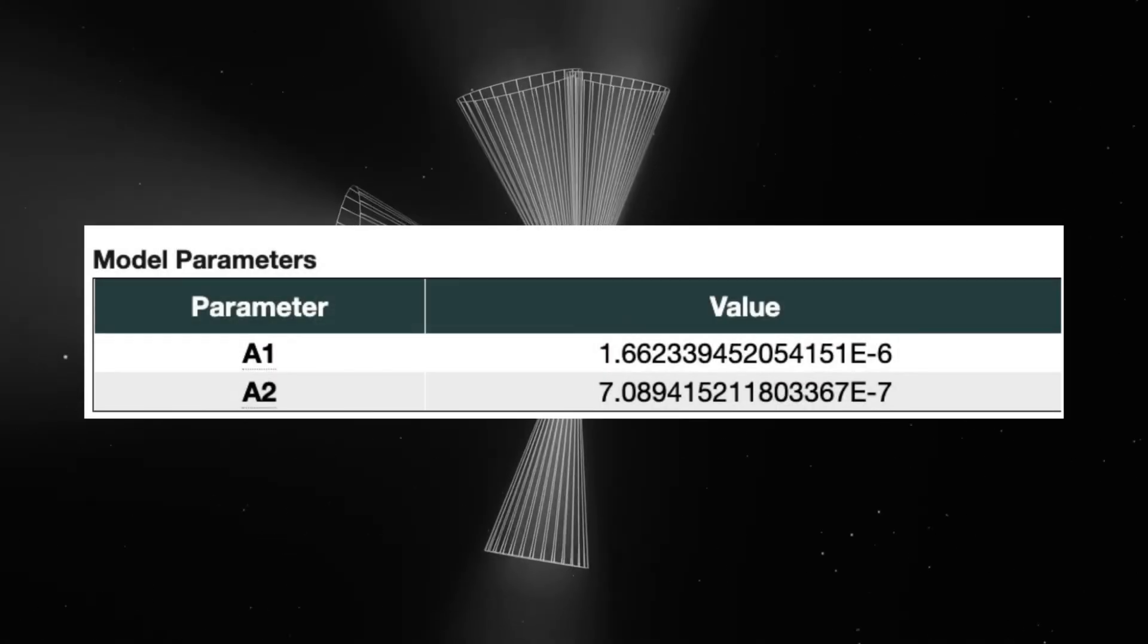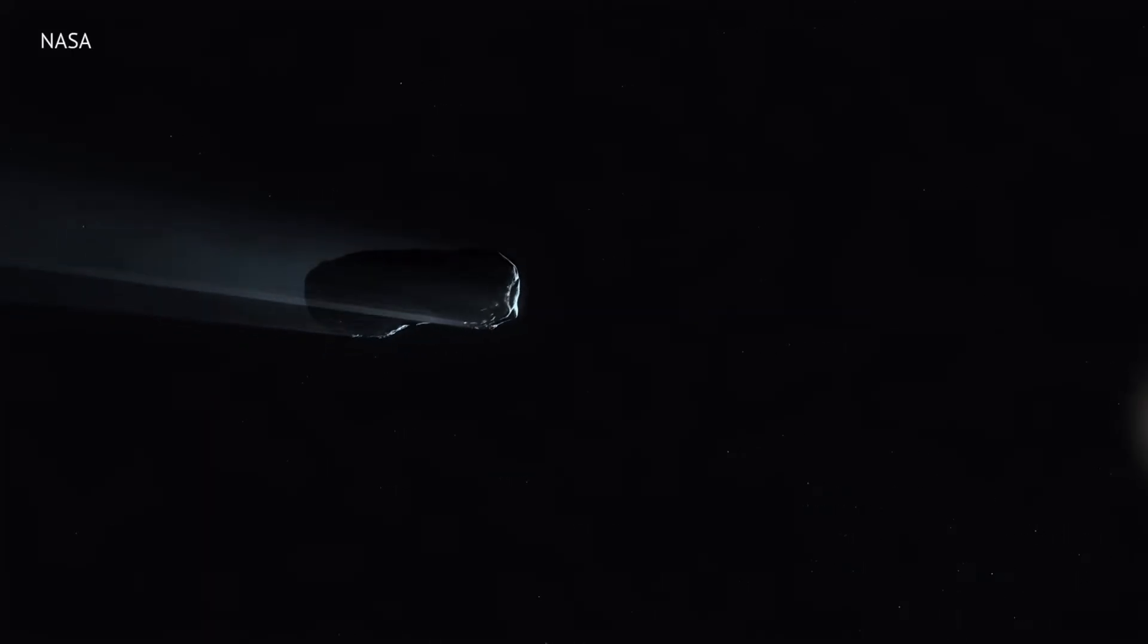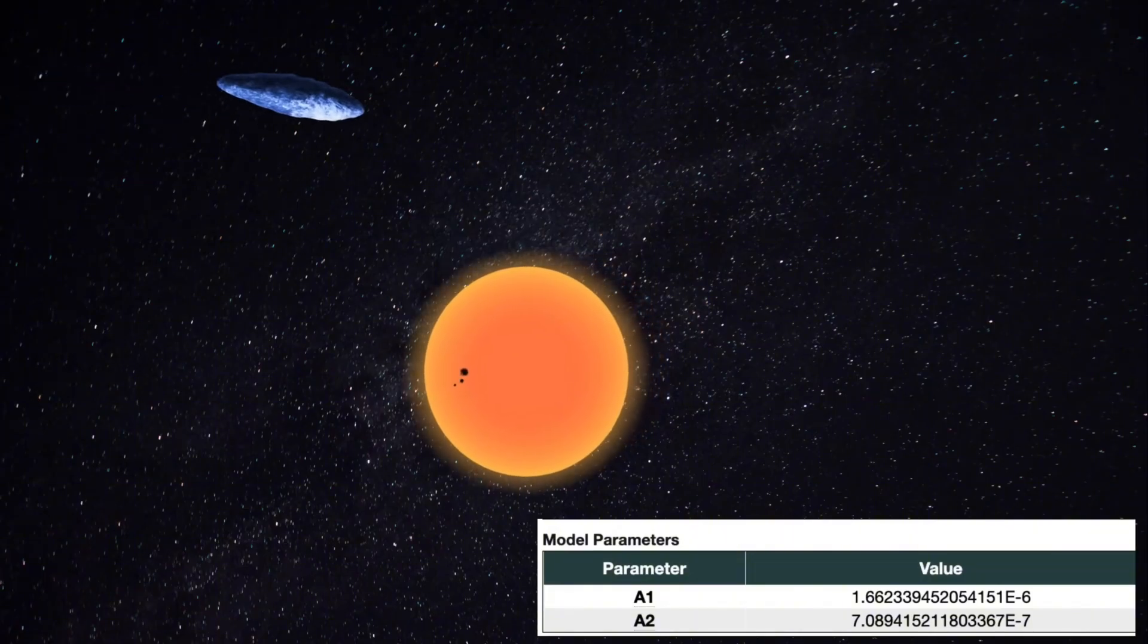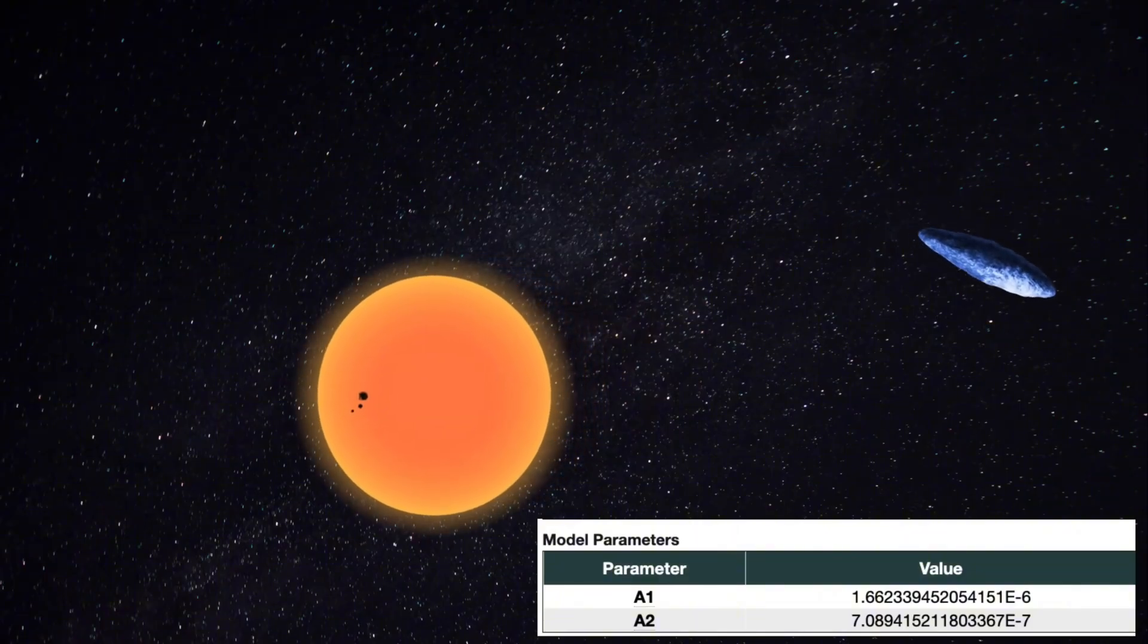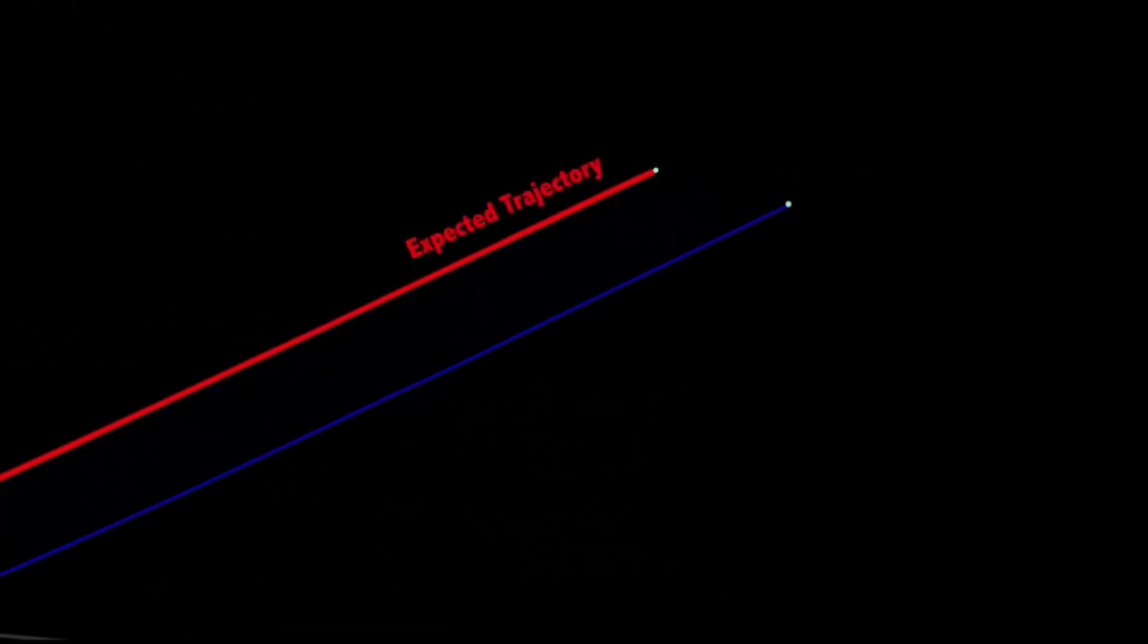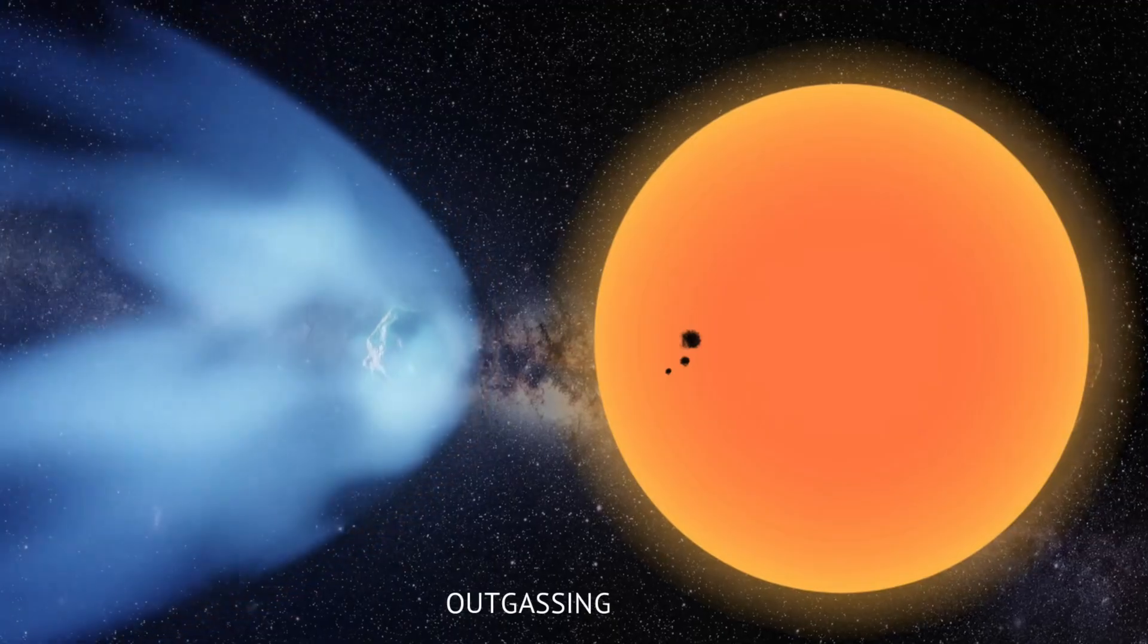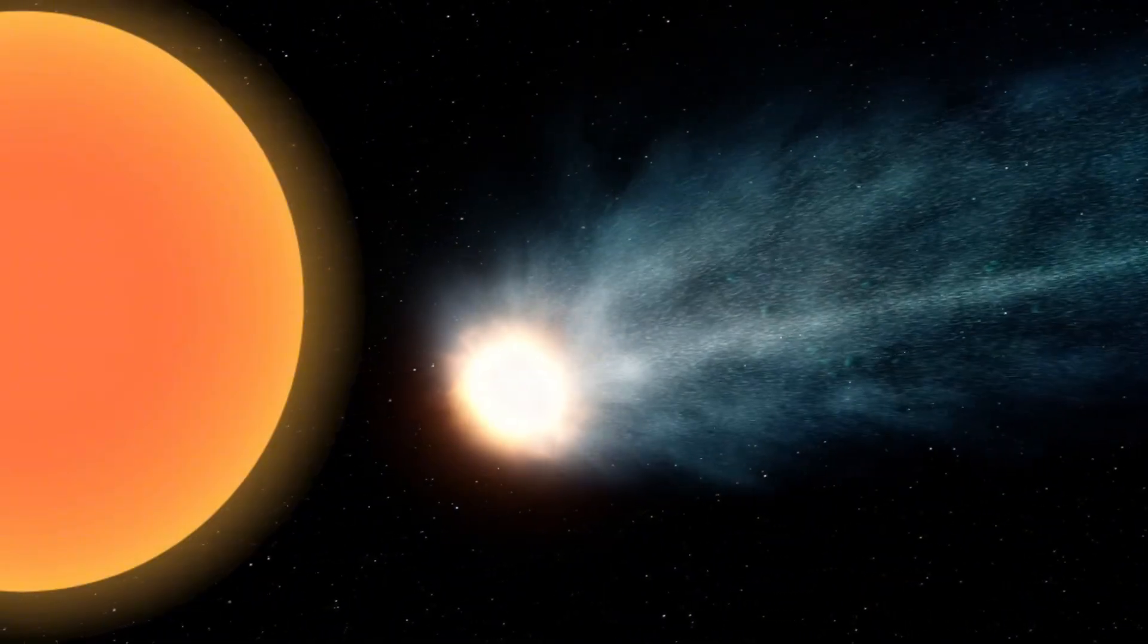Massi and the Virtual Telescope Project will keep photographing. Every clear night, every opportunity, they're building a visual record of this comet's journey through our solar system. On November 17th, they're hosting a live stream where anyone can watch as they capture new images in real time. Those images will keep coming week after week, documenting how this visitor changes as it moves away from the sun and heads back toward interstellar space.